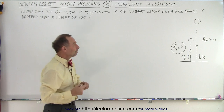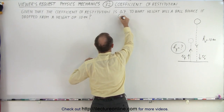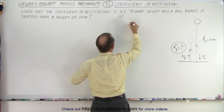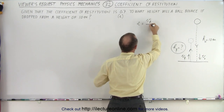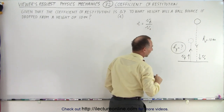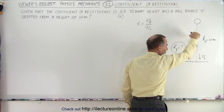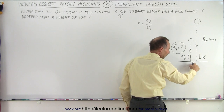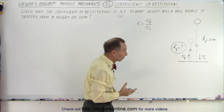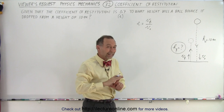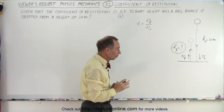The definition of the coefficient of restitution — we use the letter E to denote it. So E, by definition, is V_final over V_initial. You can see that as the ball comes down, it has the initial velocity prior to the collision with the floor, and the final velocity after the collision with the floor. We simply care about the ratio of those velocities, not the signs.